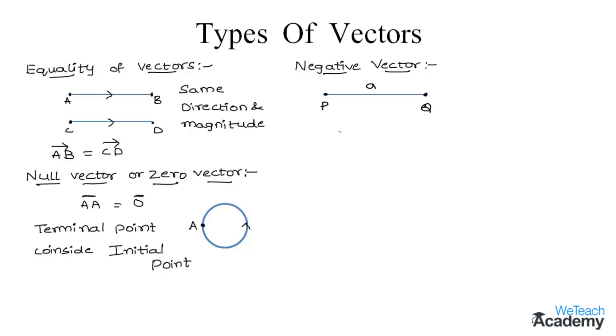Then what would be the length of the vector QP? So this line segment would have the same length A but it moves in the opposite direction. So we get here minus A.